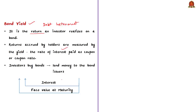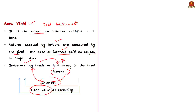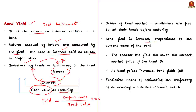These entities borrow funds for a defined period at a variable or fixed rate of interest. The returns accrued by bond holders are measured by the bond yield, which is known as the coupon rate. When investors buy bonds, they essentially lend money to bond issuers; in turn, bond issuers agree to pay interest through the life of the bond and repay the face value when the bond matures. Bond yield is calculated as the coupon rate divided by the value of the bond, multiplied by 100. Therefore, bond yield is inversely proportional to the current value of the bond — the greater the yield, the lower the current market price of the bond.